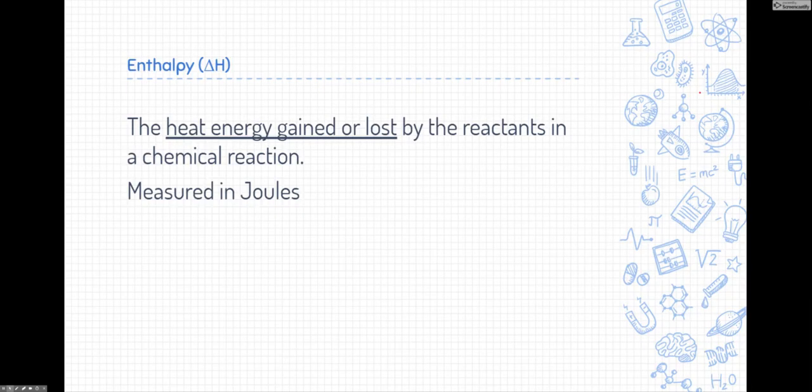All right, this brings us to a different term dealing with energy, and it's called enthalpy. And enthalpy is the heat energy gained or lost by reactants or the ingredients in a chemical reaction. Enthalpy is measured in joules, but it's a little different than energy because it's a change in energy. In fact, if you look at the symbol for enthalpy, it's a delta. That's that triangle right here. That delta represents a change in something, and that's a mathematical symbol. And then H represents heat energy, and so enthalpy is a change in heat energy.